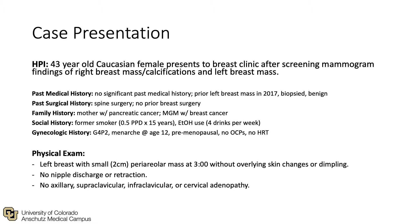We will start with a brief case presentation. We have a 43-year-old Caucasian female who presents to breast clinic after screening mammogram findings of right breast mass and calcifications, along with a left breast mass. She has no significant past medical history but has had prior breast masses, which were biopsied and found to be benign. She has a family history of a mother with pancreatic cancer and a maternal grandmother with breast cancer.